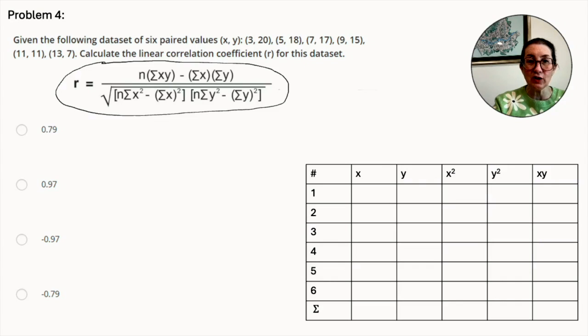We take each of the given data points and add them to the table. So x: 3, 5, 7, 9, 11, and 13. Y: 20, 18, 17, 15, 11, and 7.